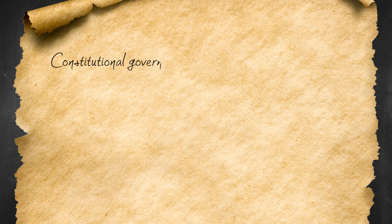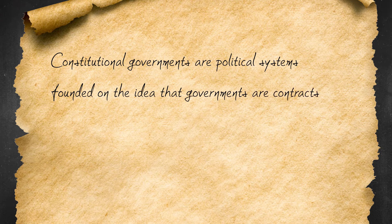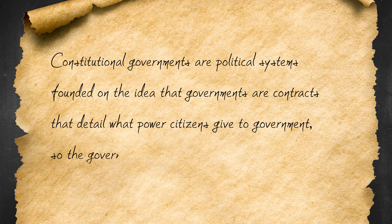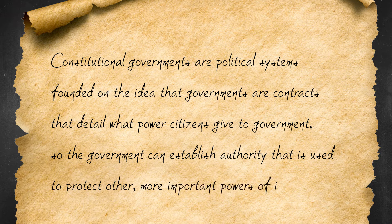Constitutional governments are political systems founded on the idea that governments are really contracts — that detail what power citizens give to government, so the government can establish authority that is used to protect other, more important powers of its citizens.